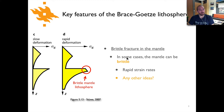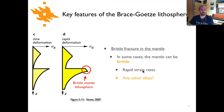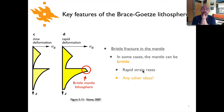Now as you can see, there are some cases where the mantle lithosphere can be brittle. Rapid strain rates is one case. Are there any other possibilities for how we could have brittle behavior in the mantle lithosphere? Why don't you pause the video for a moment, think about that, and when we come back we'll talk about some of these other possibilities.